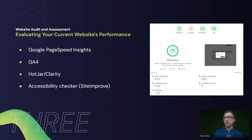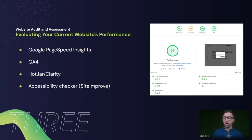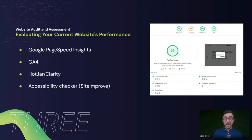We can also look at GA4 and HotJar or Clarity. GA4 specifically tells you how many visitors you're getting to the site, bounce rates on pages, areas people are visiting or not engaging with, and conversion tracking — which forms are being submitted and which aren't. HotJar and Clarity are very similar tools that create heat maps so you can see how far people are scrolling down a page and where they're clicking, showing different user journeys.